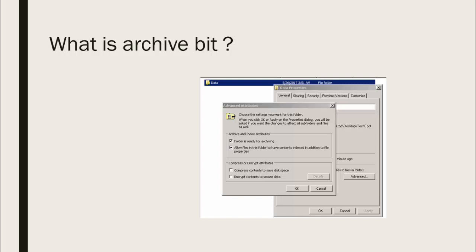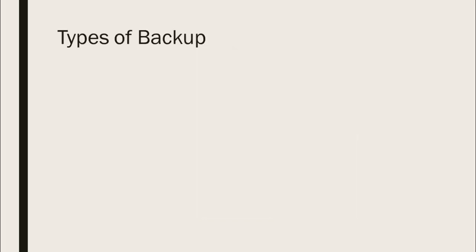Now let us go into the backup types in depth. First is full backup. From the name itself it's full — whatever content you have mentioned in your backup software, it completely takes the backup. For example, if you have a system with 100 GB of data, the complete 100 GB will be backed up by this job. That's full backup — it fully covers everything.